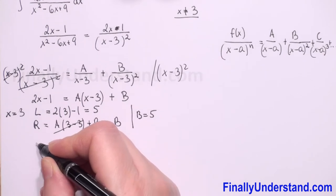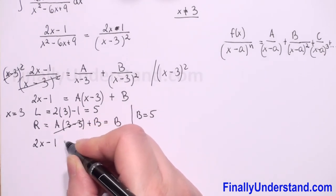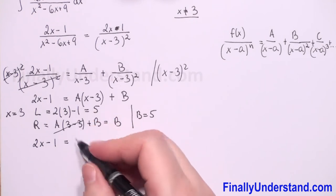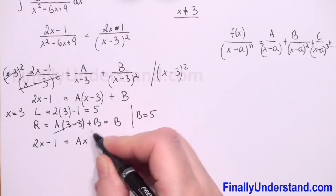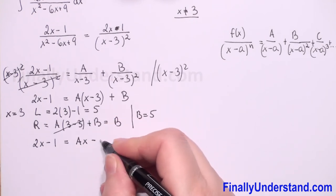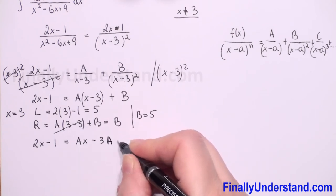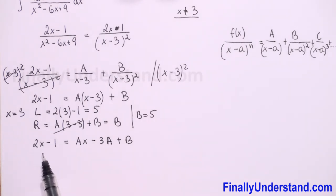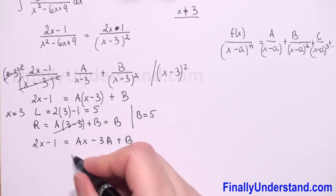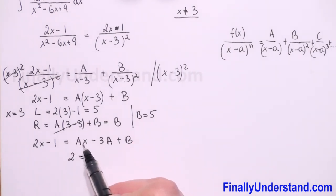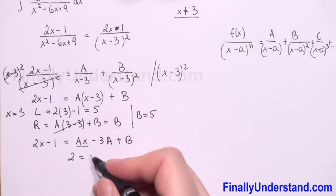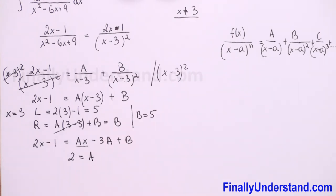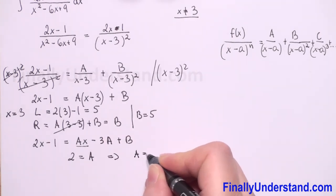To find A we compare coefficients. The left side is 2x minus 1. The right side expands as A times x minus 3A plus B. Comparing the coefficients of x: on the left we have 2, and on the right the coefficient of x is A. Therefore A equals 2.